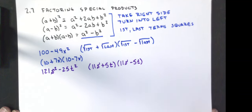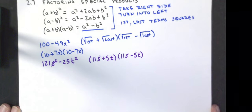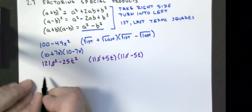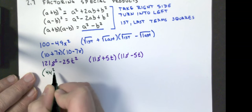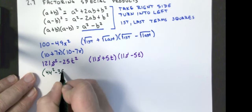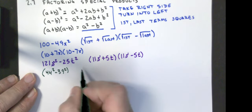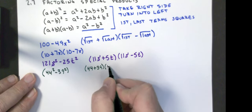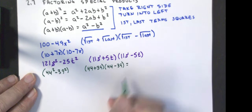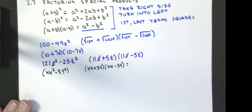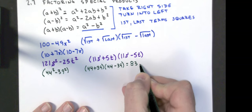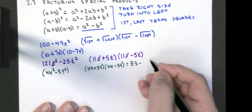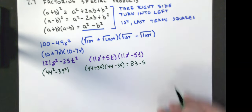We can expand this even to work with just general numbers. For example, what is 44² minus 39²? Notice both of those are perfect squares, so it's (square root of the first plus square root of the last) times (square root of the first minus square root of the last): (44 + 39) times (44 minus 39). That's 83 times 5, which gives us 415.